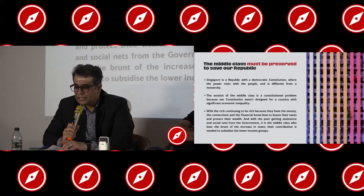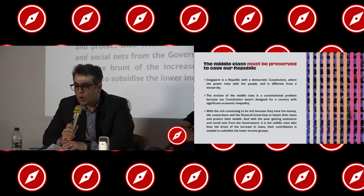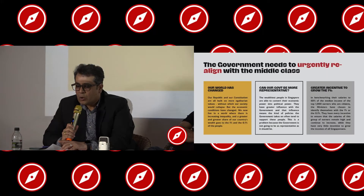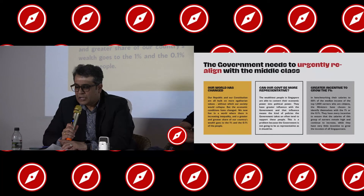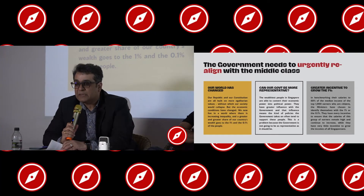To have a republic, we need a society where the distribution of wealth is relatively egalitarian. Without this, we would have an oligarchy, or ochlocracy — mob rule. Some examples of oligarchy and ochlocracy are Iran, and some even say China. Our republic and constitution are built on more egalitarian values, without which our society would collapse. But the economic conditions have changed — we now live in a world of increasing inequality, where a greater share of our country's wealth goes to the 1% and the 0.1%.